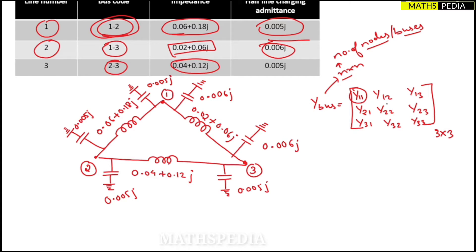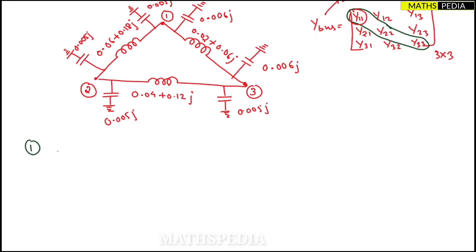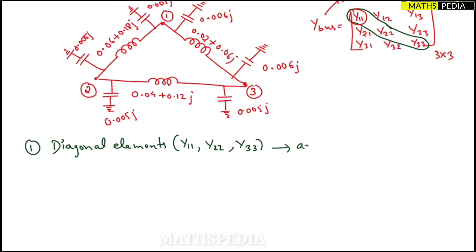For diagonal elements — Y11, Y22, Y33 — the rule is: add all the admittances associated with that particular node. This is for admittances, not impedances, so convert as needed.